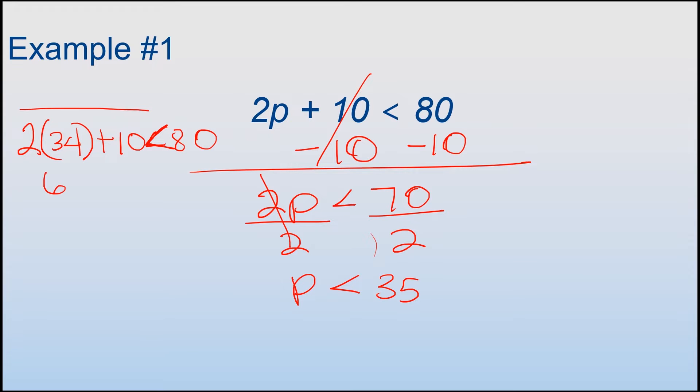2 times 34 is 68 plus 10 is less than 80. Okay, 68 plus 10 is 78. So 78 is less than 80. That's true. Okay, if I were to plug the actual number in, we would have gotten 80. So we just know that the less than sign says it's less than that. So that's fine. So let's move on to example number 2.